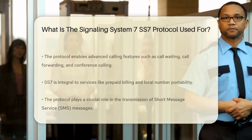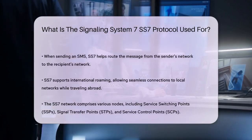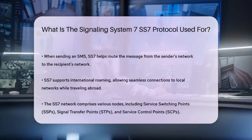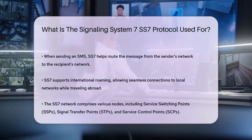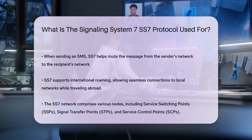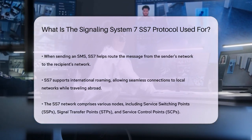Another key aspect of SS7 is its ability to support international roaming. When you travel to another country, your phone can seamlessly connect to local networks because SS7 helps identify the country code and locates the specific cell tower you're using.